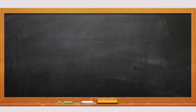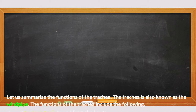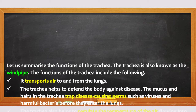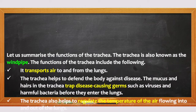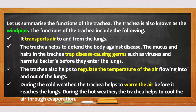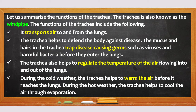Let us summarize the functions of the trachea. The trachea is also known as the windpipe. Its functions include the following: it transports air to and from the lungs; it helps to defend the body against disease — the mucus and hairs in the trachea trap disease-causing germs such as viruses and harmful bacteria before they enter the lungs; and it helps to regulate the temperature of air flowing into and out of the lungs. During cold weather, the trachea helps to warm the air before it reaches the lungs. During hot weather, the trachea helps to cool the air through evaporation.